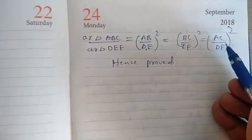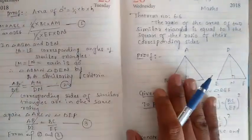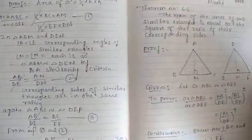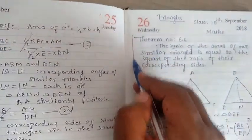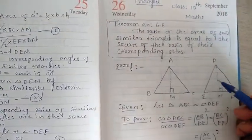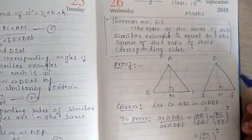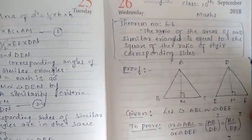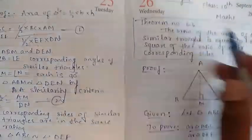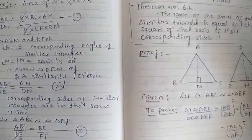This theorem is very important for the examination. For 5 marks or 4 marks they will ask such questions, but in the exam they will give only the statement — so you have to prove it by taking such diagrams. Remember this statement. In the next class we will see examples based on this theorem. I hope you understood, children. We will see in the next class. Thank you for watching. Have a nice day.